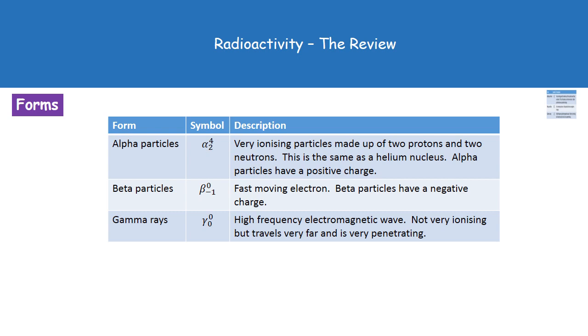So our alpha particles won't travel very far. They're stopped by a piece of paper, remember, but they're very ionizing. And then at the other end of the spectrum, our gamma rays are not very ionizing but very penetrating.